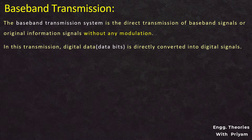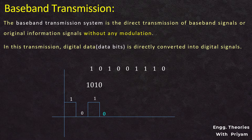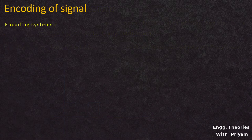Data bits are a combination of ones and zeros, and together they can represent one character of data. In baseband transmission, data bits are directly converted into digital signals using voltage levels. In a digital signal, a higher voltage level represents bit 1 and a lower voltage level represents bit 0. These voltage levels represent data such as 1010. Instead of using modulation, different encoding systems are used in baseband transmission.